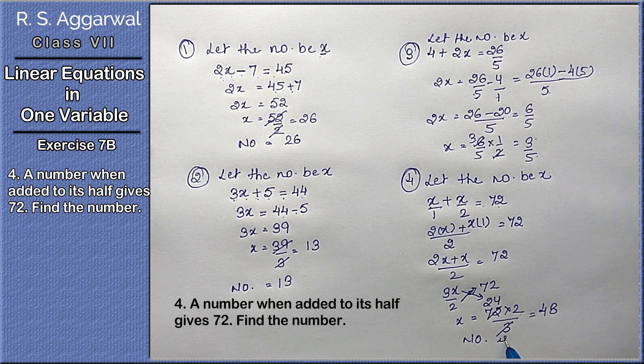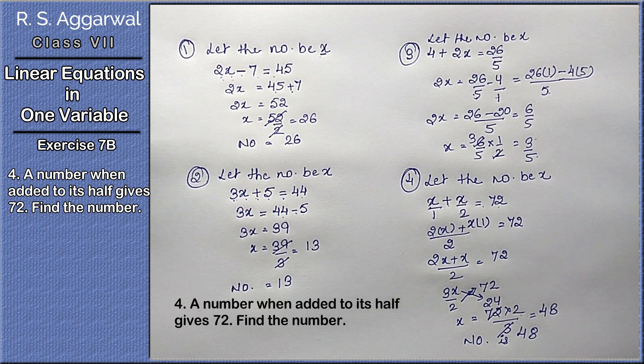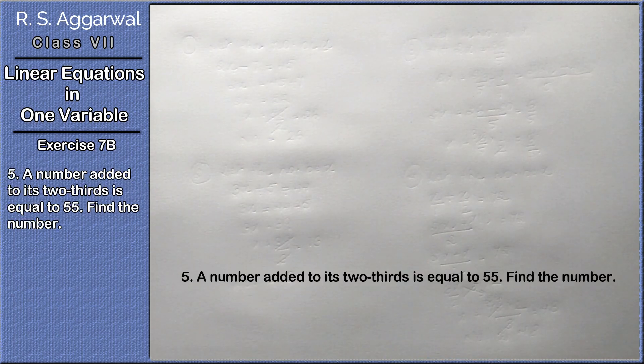3 ones are 3, 3 twos are 6, 3 fours are 12. 24 into 2 is 48. Hence the number is 48.